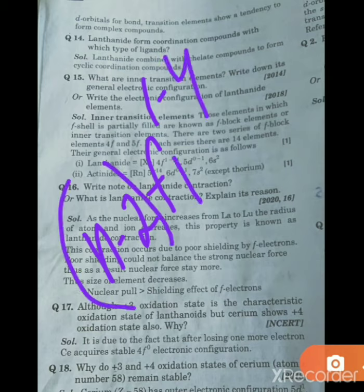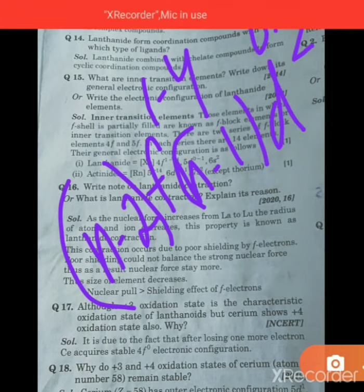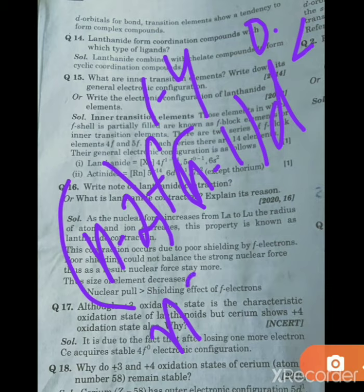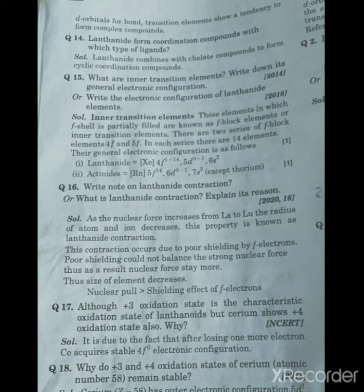The general electronic configuration is (n-2)f^1-14, (n-1)d^0-2, and ns^2. This is their general electronic configuration.